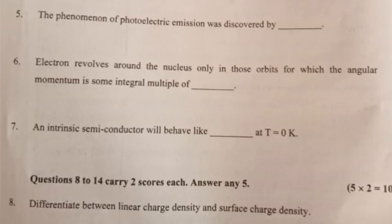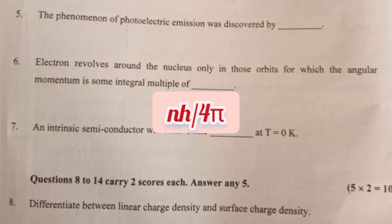Question 6: Electron revolves around the nucleus only in those orbits for which the angular momentum is some integral multiple of nh by 2π. Question 7: An intrinsic semiconductor will behave like an insulator at T equals 0 Kelvin.